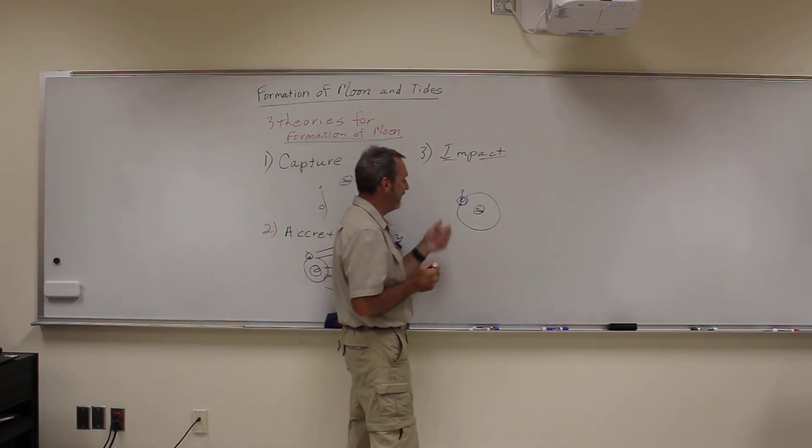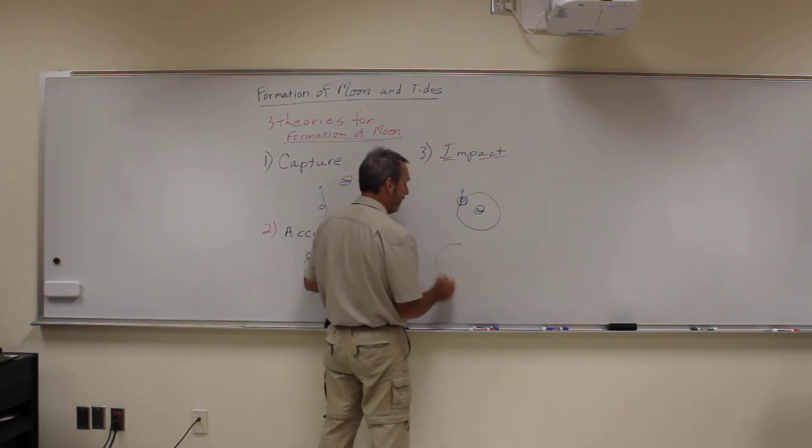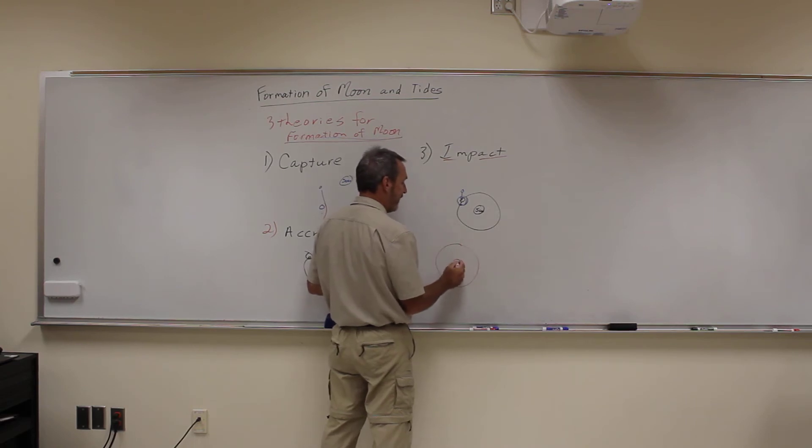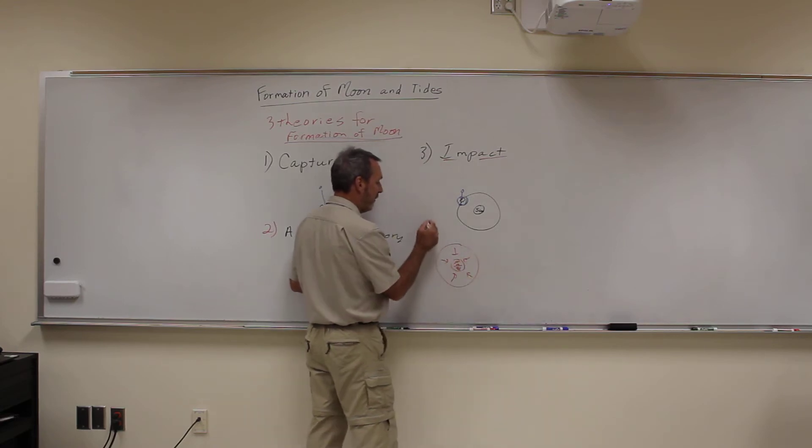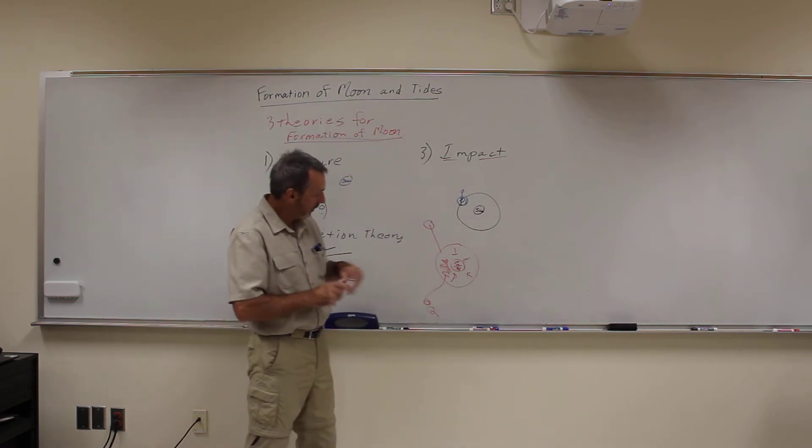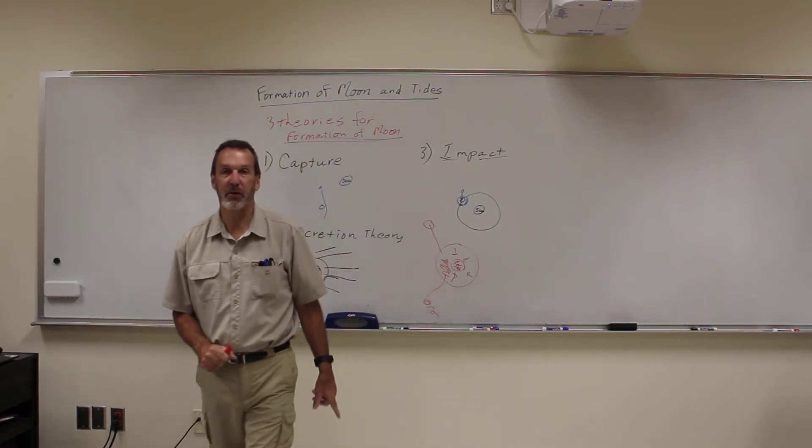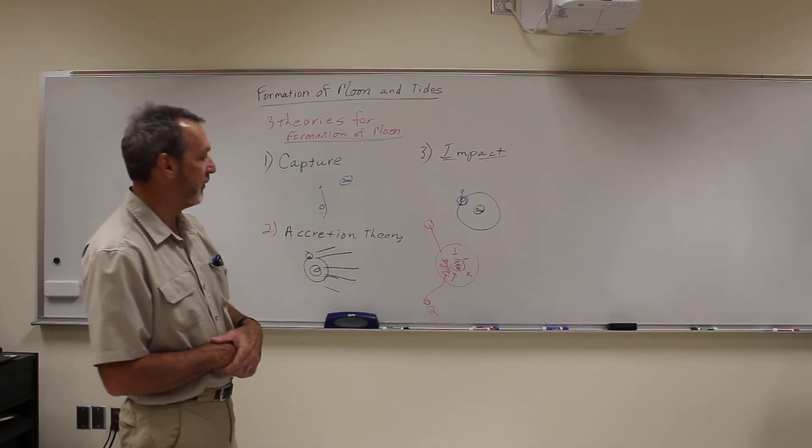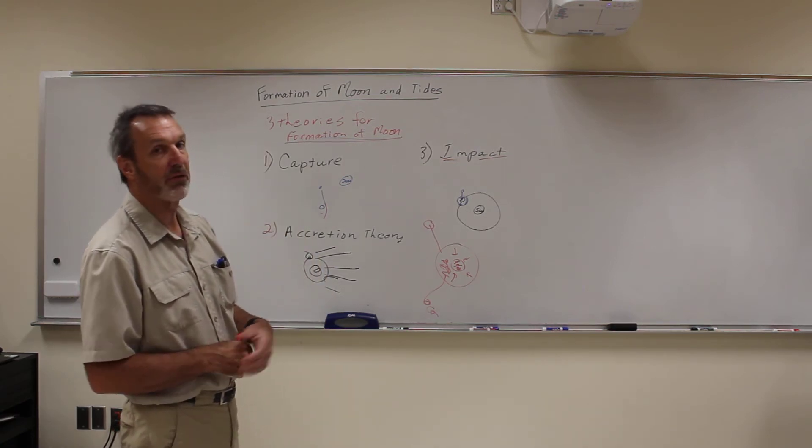Also it matches the idea that the density would be less, because here's the earth. The earth has already had the iron and nickel starting to gravitate towards the center because it's heavier. It's still a molten sphere. When this object comes in, it's going to break away most of the stuff from the outer part, which means it would have less iron and nickel in it, which is why it has a smaller iron and nickel core than the earth does, a lower density.